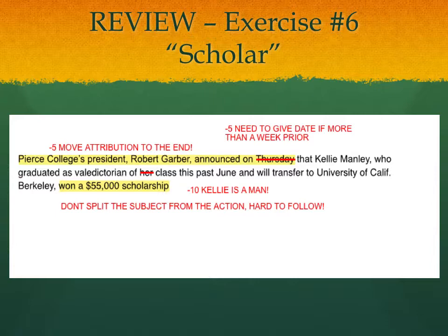If it happened more than a week ago, you give the day of the week or the date. In this case it was only two days earlier, so you just give the day. Kelly is a man, so this next example incorrectly lists Kelly as a woman — indicating it's "her class" when it's really his. Here the attribution is at the beginning: "Robert Garner announced that Kelly Manley, who graduated as valedictorian of her class this past June, will transfer to the University of California... won a $55,000 scholarship." It's really hard to follow — you split the subject from the action. You need to put them closer together.